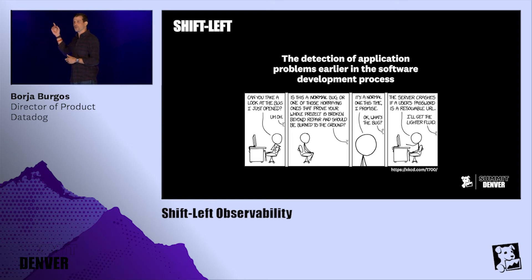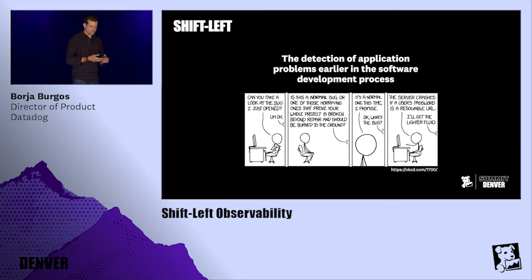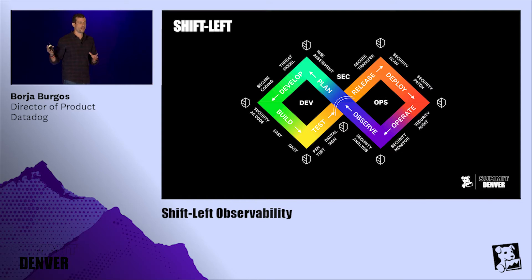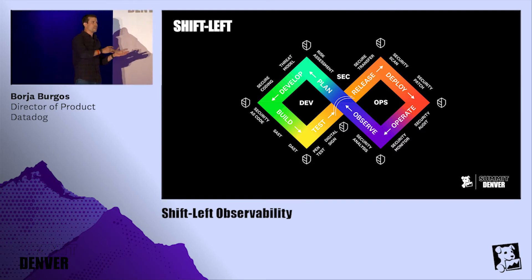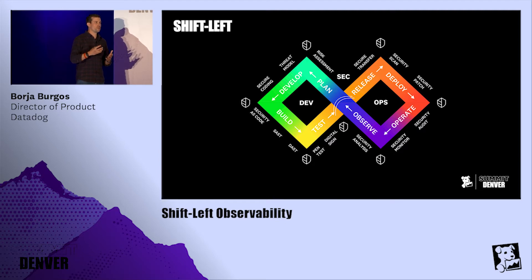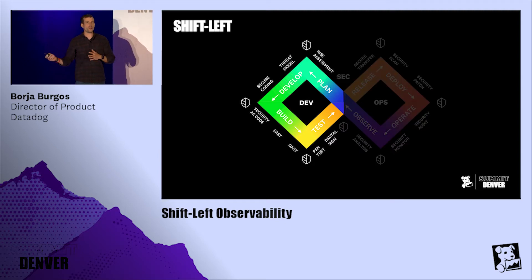No one wants to be in that situation — no one wants to pull out the flamethrower and ignite their servers. And why is it called shift left? We've got this notion of continuous integration, continuous delivery, deployment workflows that I'm sure all of you here are familiar with. There are many things that happen on the development side and many on the operational side. Most of the observability we do today — the monitoring, the checks — happens in the latter half of this diagram.